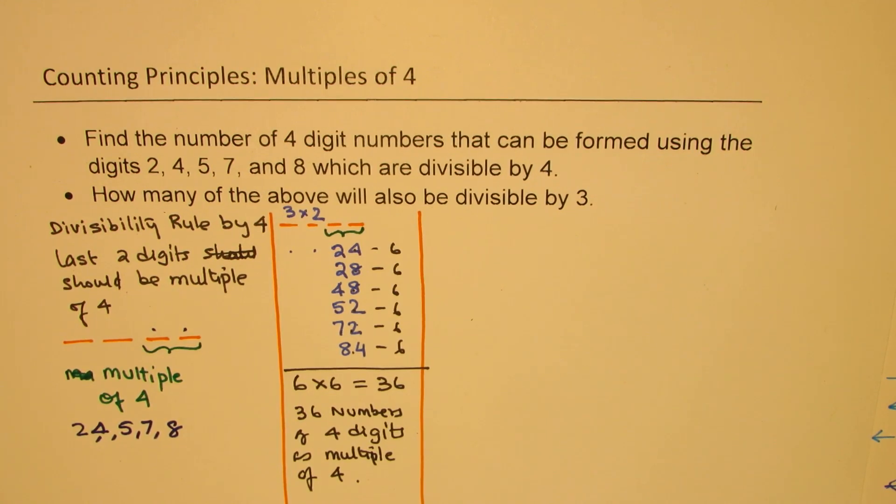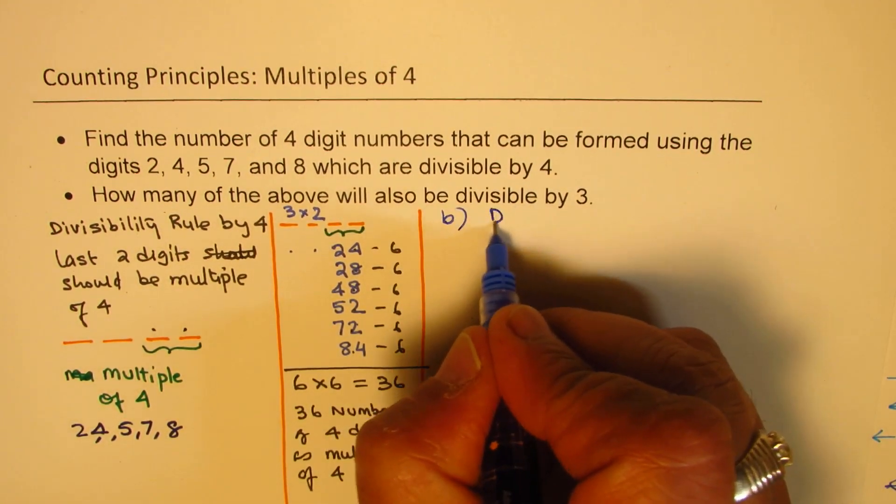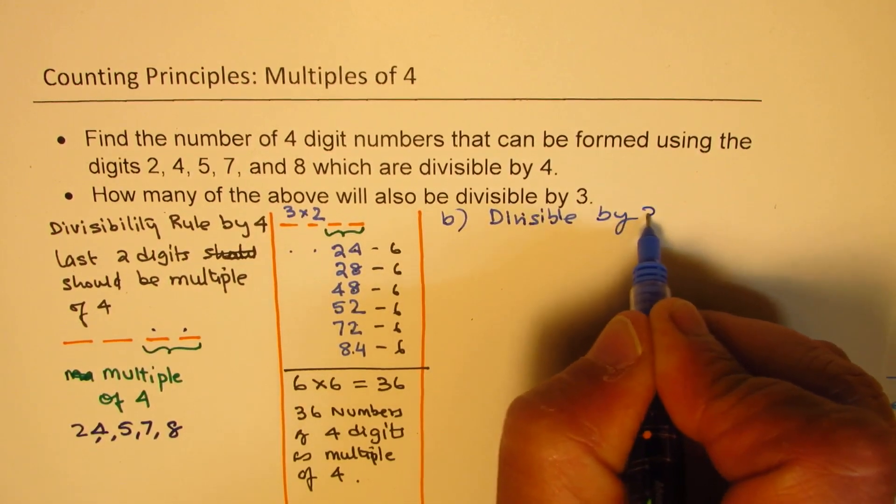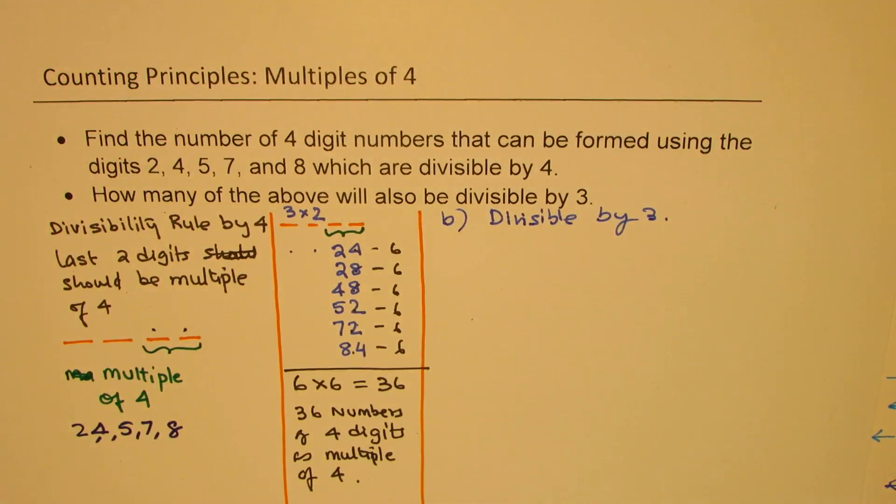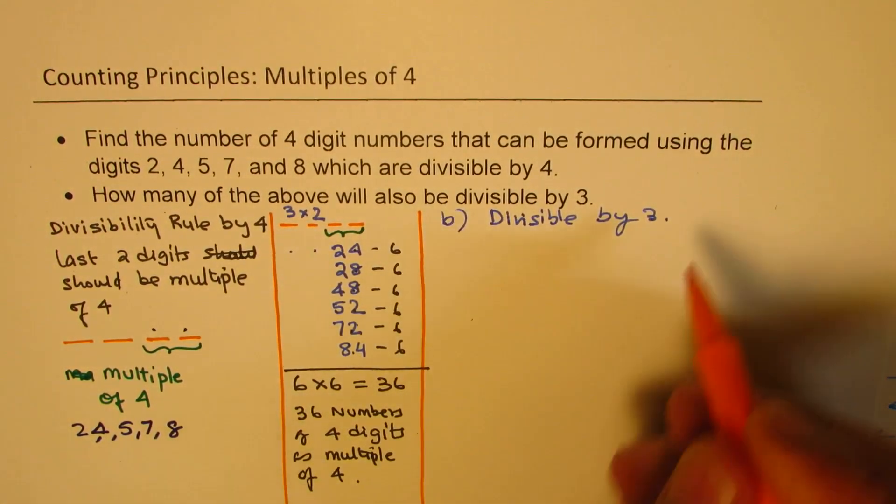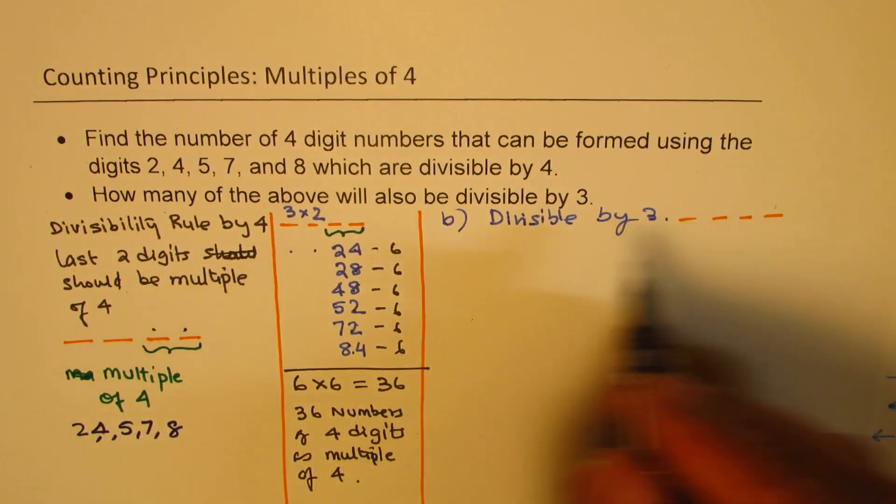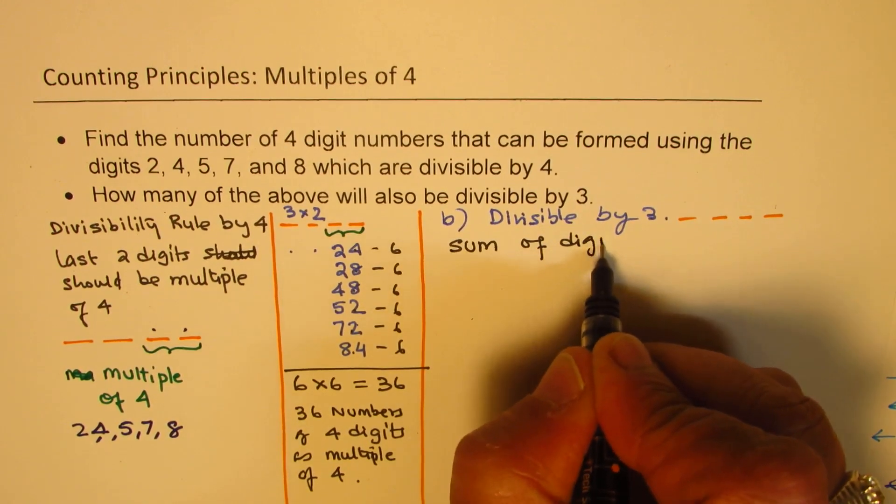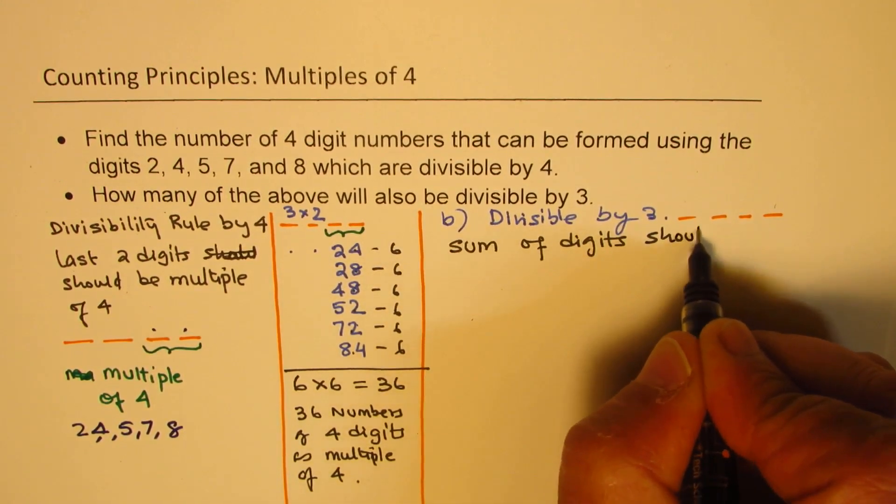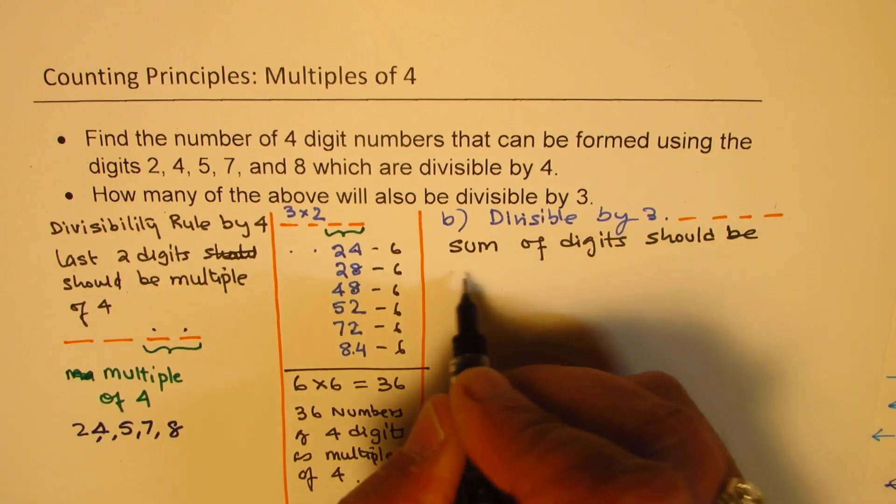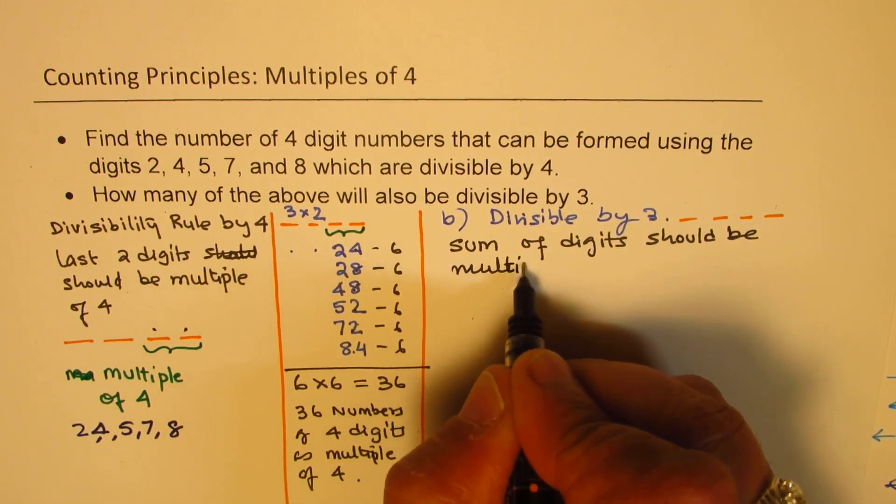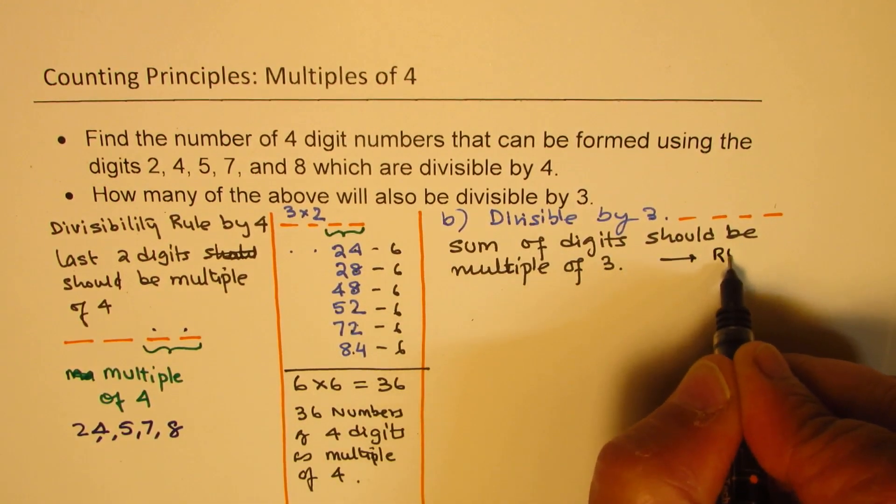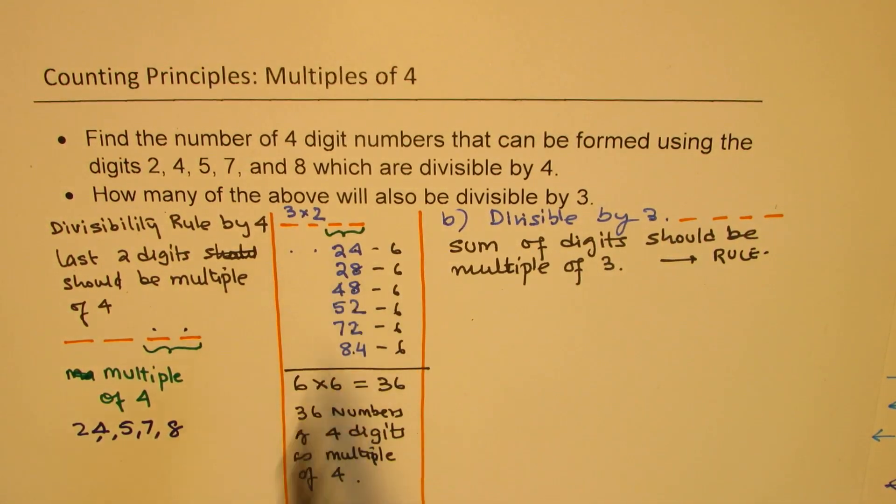Now, let's look into part B, which is divisible by 3. What is the rule for that? So if you are taking these 4 digits, in that case, sum of digits should be multiple of 3. That is the rule. Now, we know we have to select out of these.